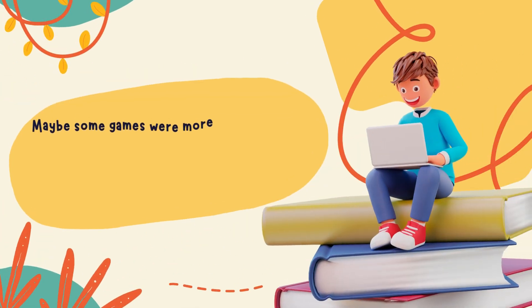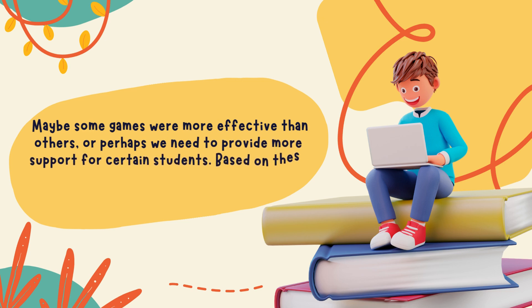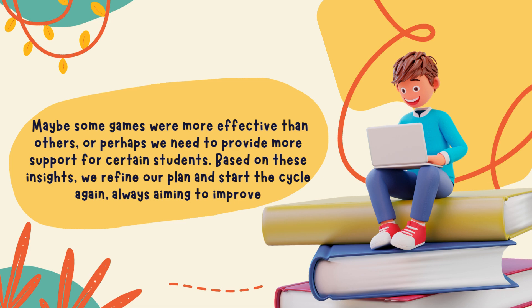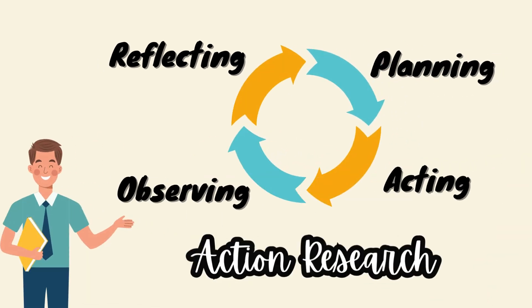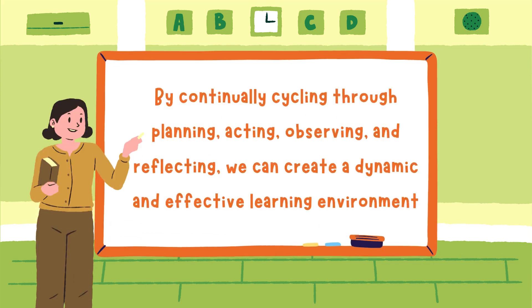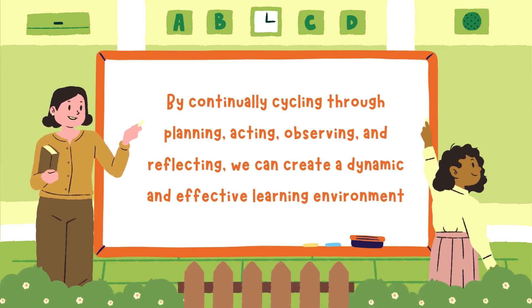Reflection is all about looking at the results and deciding what changes we need to make. Maybe some games were more effective than others, or perhaps we need to provide more support for certain students. Based on these insights, we refine our plan and start the cycle again, always aiming to improve. And that's the essence of action research in education — it's a powerful tool that helps us be proactive and responsive, making evidence-based changes to improve student learning. By continually cycling through planning, acting, observing, and reflecting, we can create a dynamic and effective learning environment.